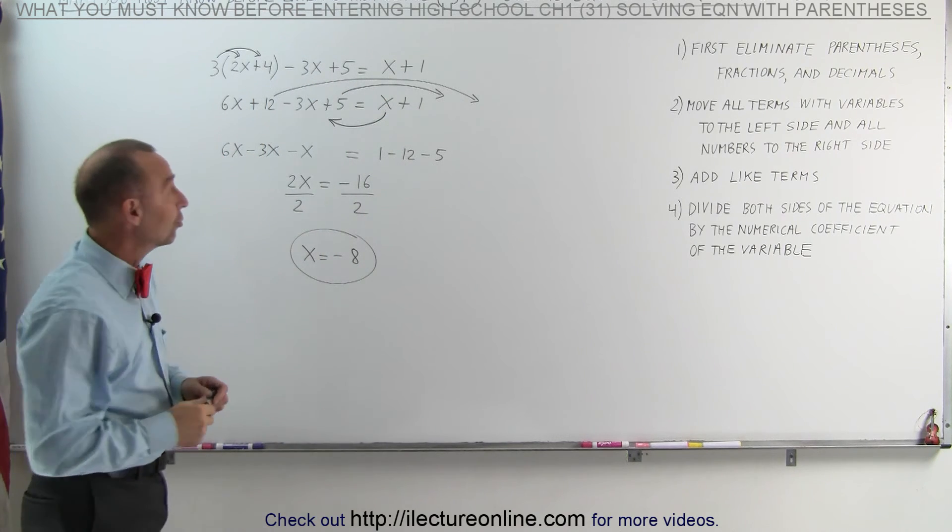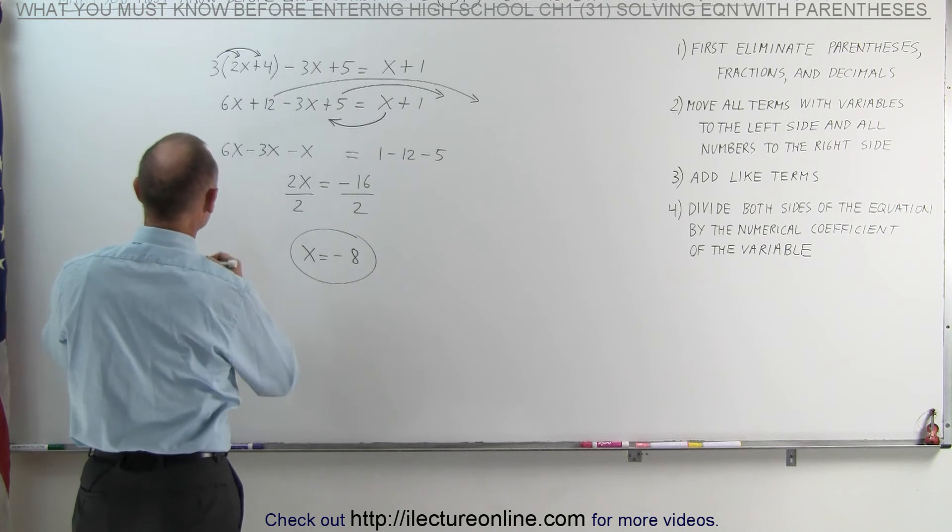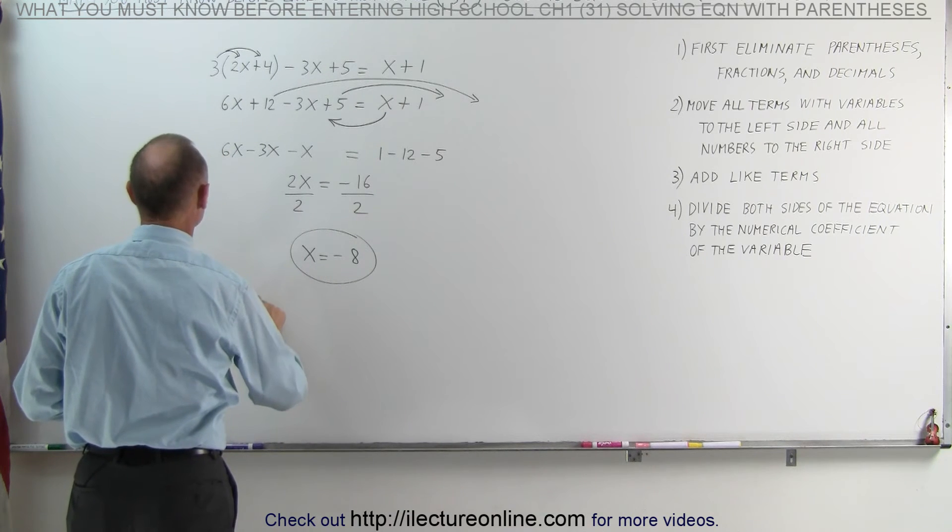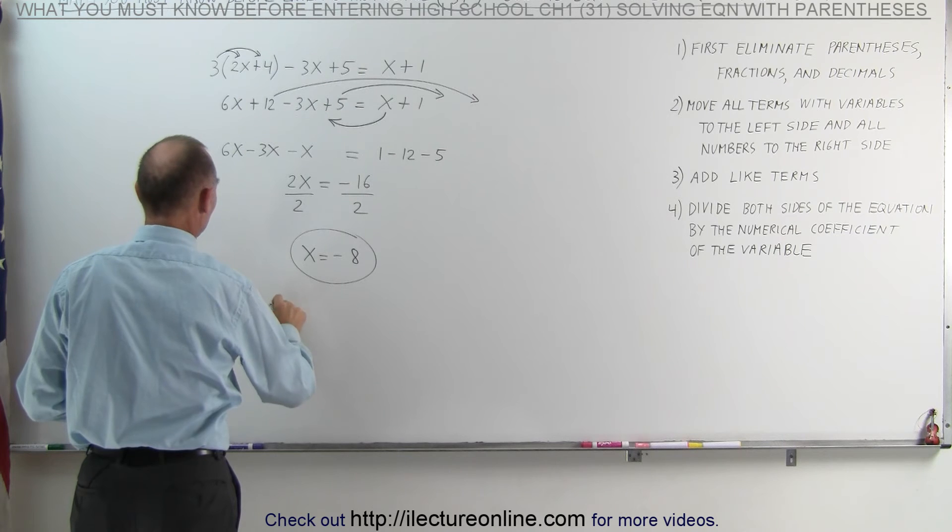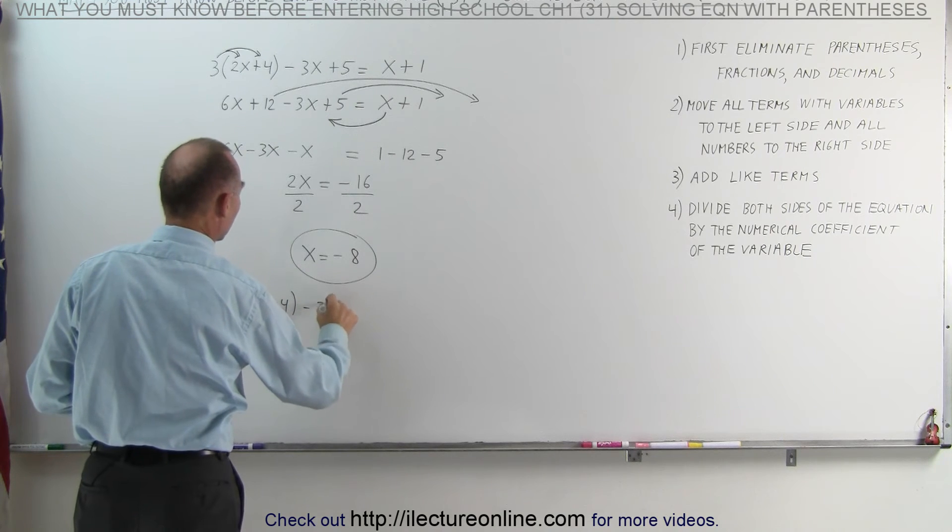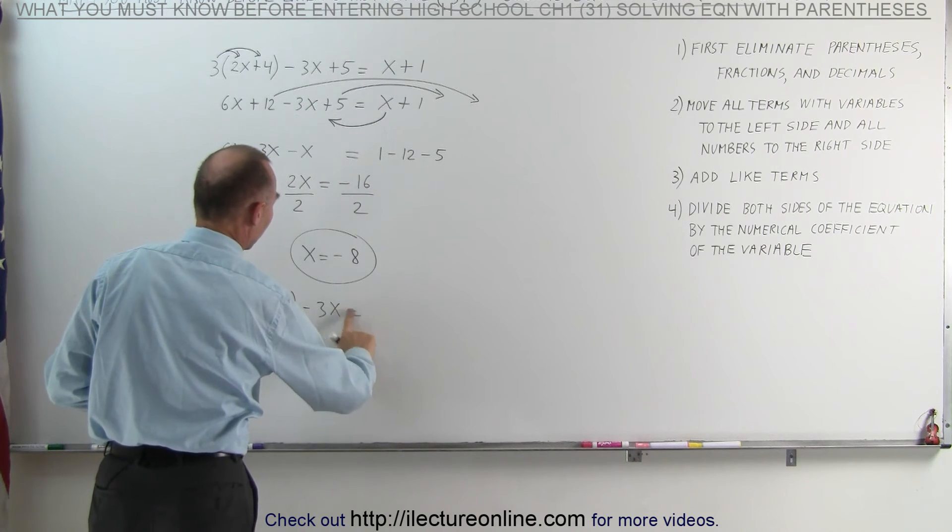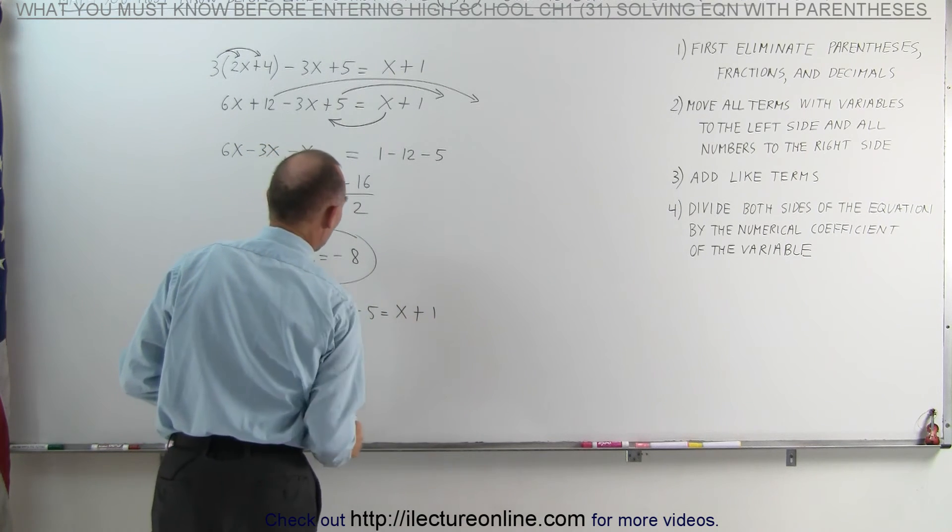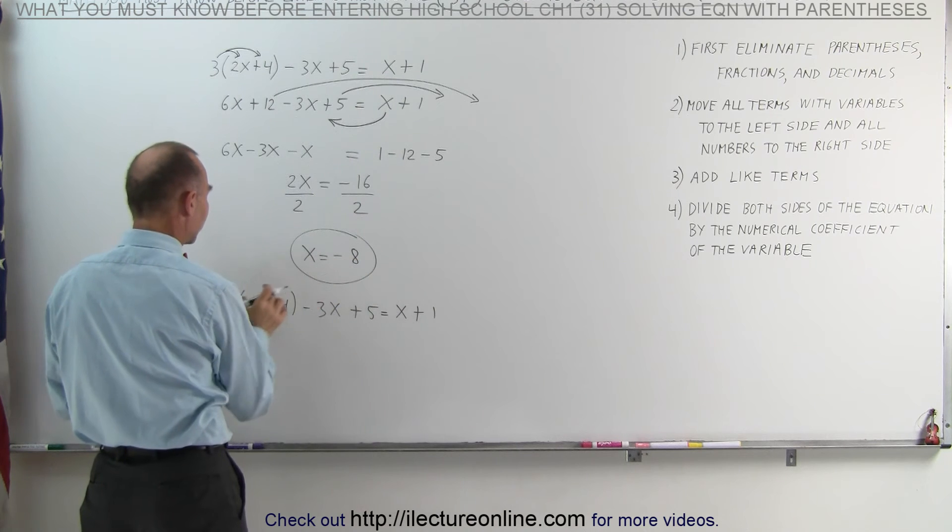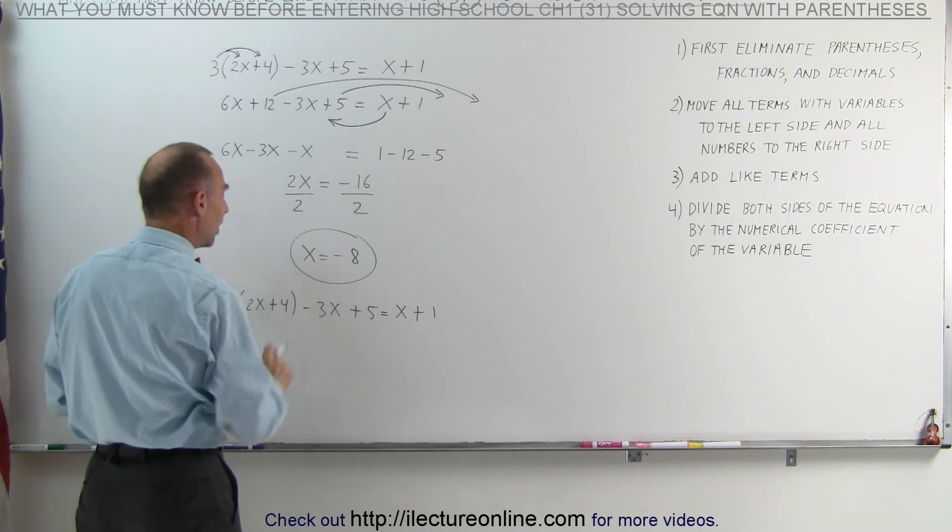Let's go ahead and try that just to see how that would work. The original equation was 3 times 2x plus 4 minus 3x equals, oh, I forgot the plus 5, plus 5 equals x plus 1.